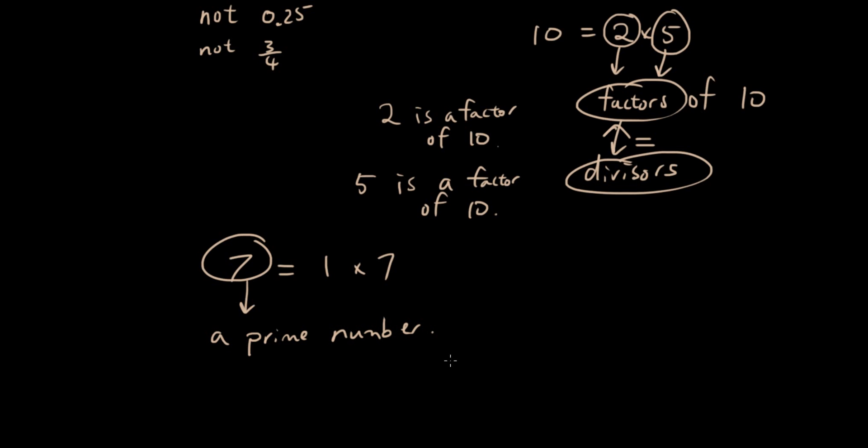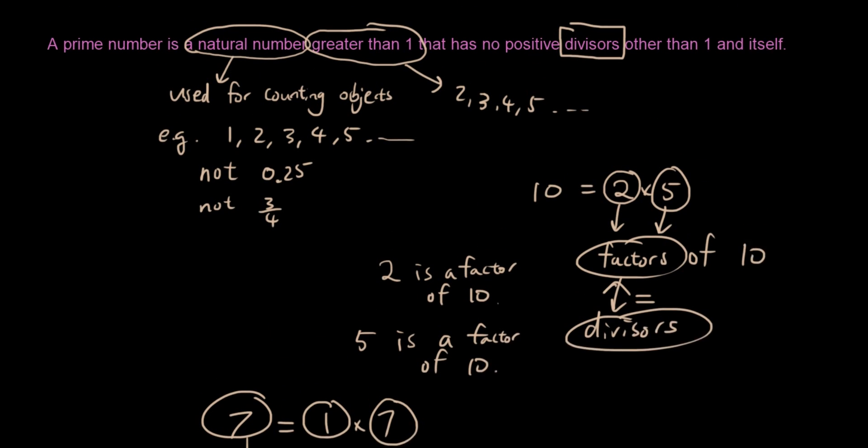Because the only 2 numbers that can multiply together to give you 7 is 1 and 7, which is the same as the number itself. So that's what this definition is saying.